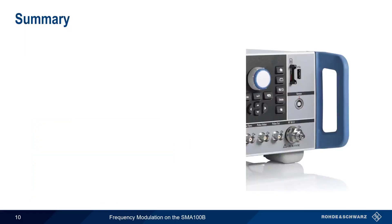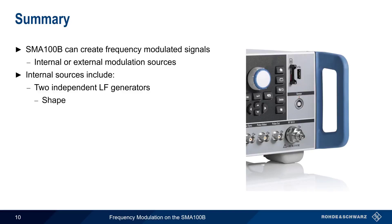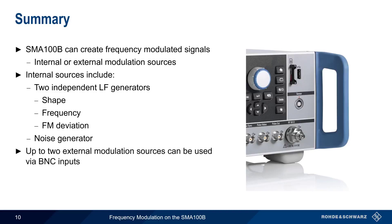Let's end with a brief summary. The Rohde & Schwarz SMA-100B analog signal generator can be used to create frequency modulated signals using either internal or external modulation sources. The available internal sources include two independent LF or low-frequency generators, which can provide a variety of different shapes such as sine, pulse, and others. We can also specify the frequency of the modulating signal and the FM deviation. In addition, the SMA also has a configurable internal noise generator that can be used as a modulation source. And finally, external modulation sources can be connected to either or both of the SMA's two external BNC connectors.